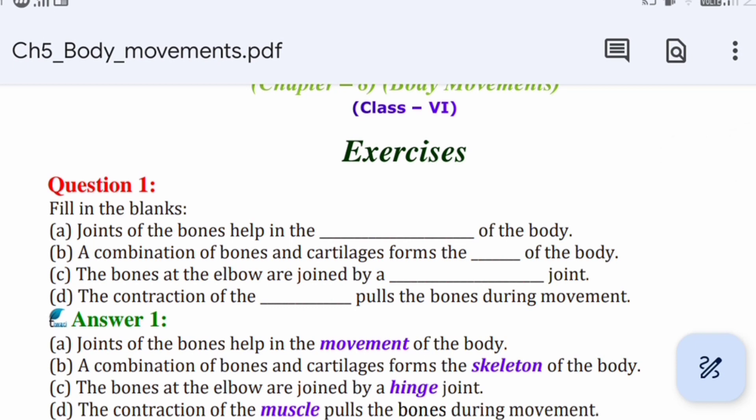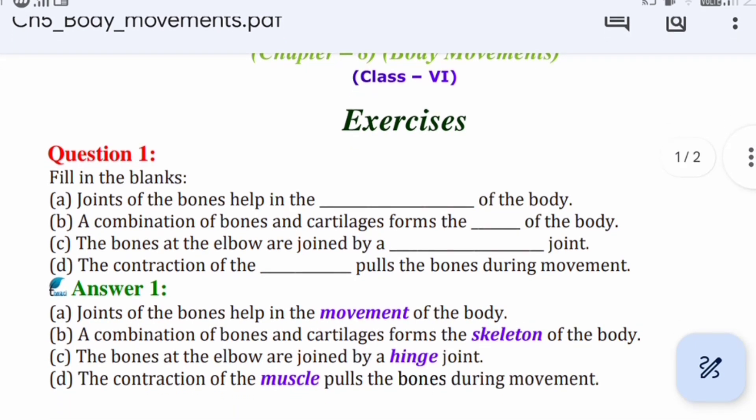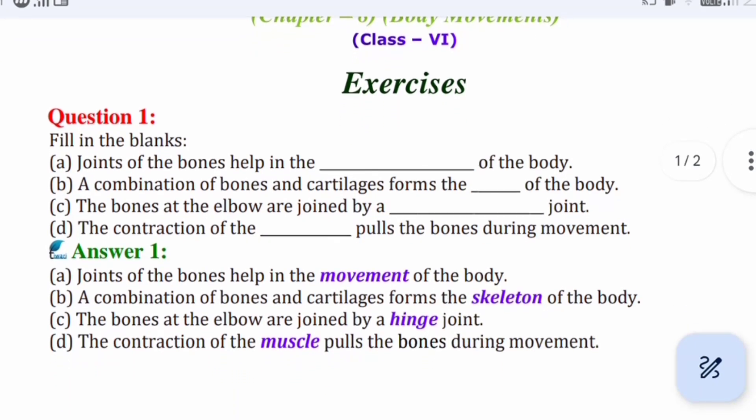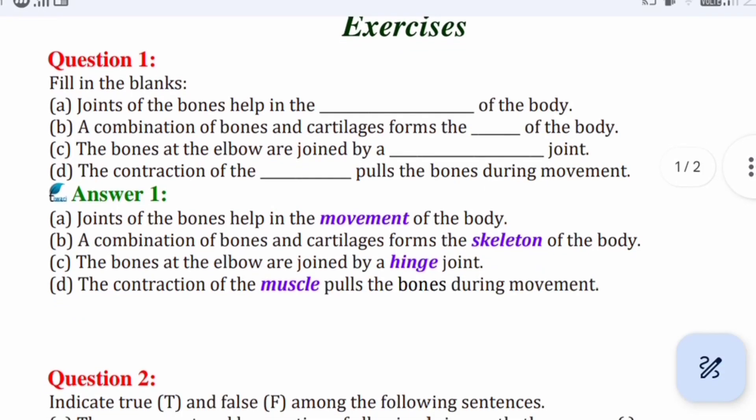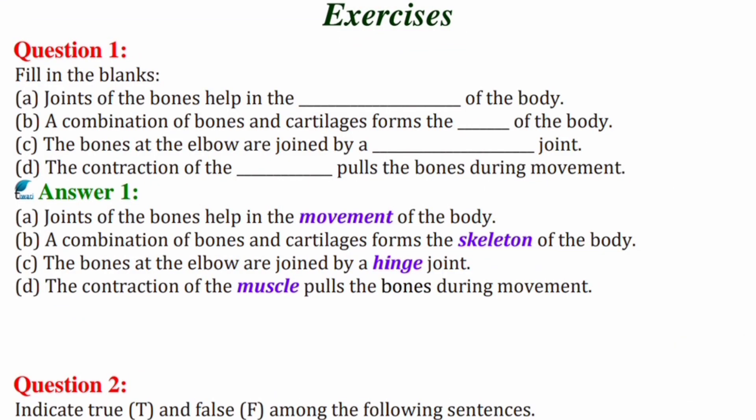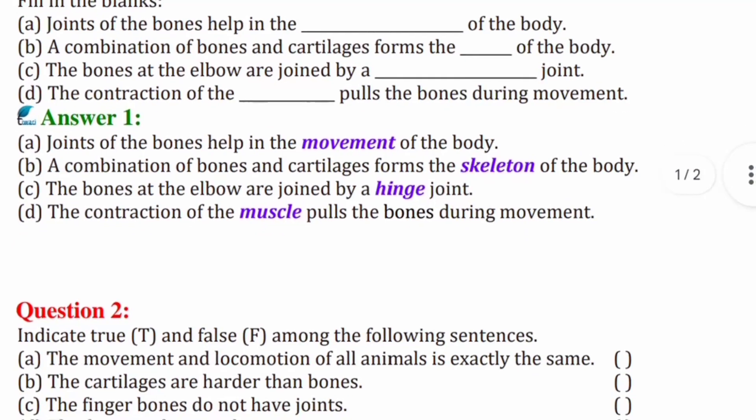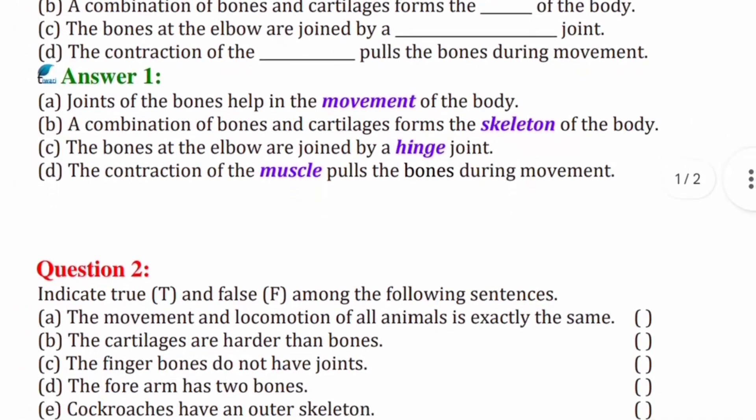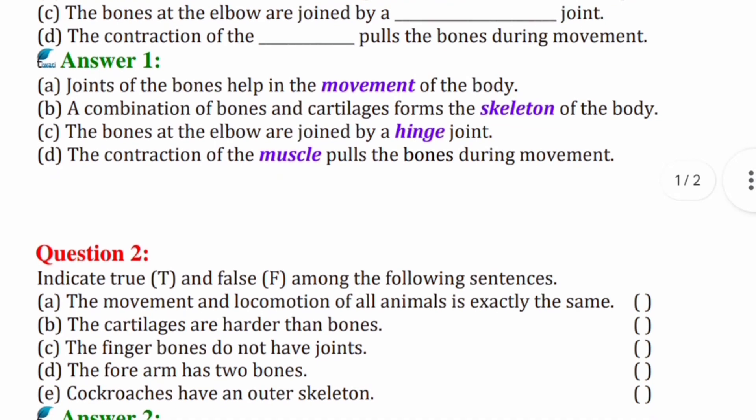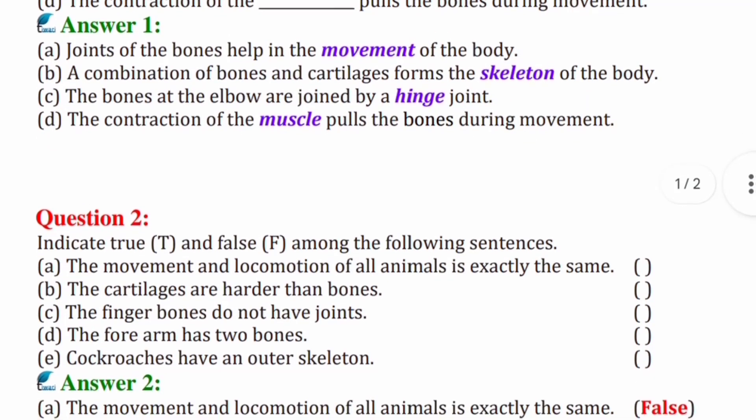Let's see the next question. Question number two: Indicate true or false for the following statements. The first statement: The movement and locomotion of all animals is exactly the same. No, the statement is false. The movement is different in different animals.